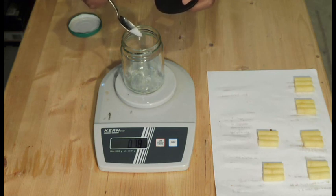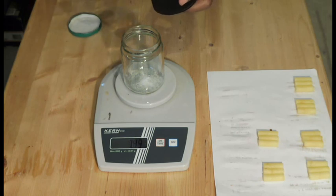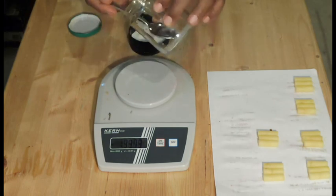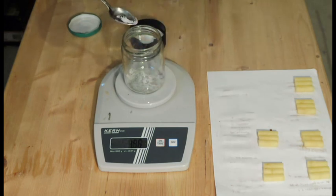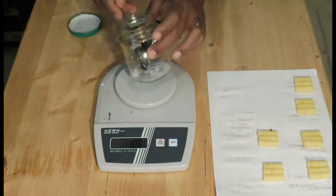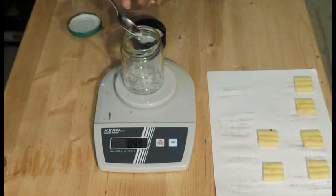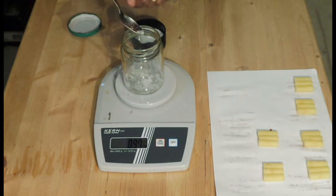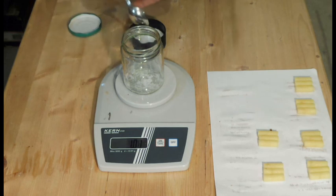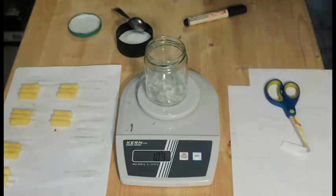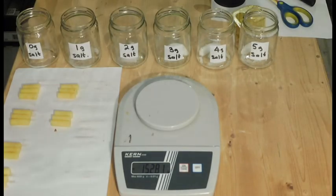Sometimes it can be tricky to measure exactly one gram. I was able to weigh 1.01 grams salt. Always label your jars. Now all the jars have their respective salt amounts.